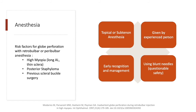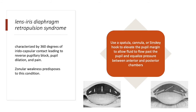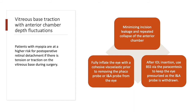You may target minus 1 to minus 2 diopters of postoperative refraction to compensate for any hyperopic surprises, especially if using negative IOLs. It is better to use monofocal IOLs rather than multifocal IOLs, as they are less sensitive to vertical decentration, which is more common in myopic eyes. At the time of surgery, to avoid the higher risk of globe perforation with retrobulbar and peribulbar anesthesia, topical or sub-Tenon anesthesia may be a better alternative. Early recognition of globe perforation signs like hypotony and loss of red reflex is important. One intraoperative challenge is the increased depth of the anterior chamber, which can be minimized by decreasing irrigating bottle height and increasing flow rate. Lens-iris diaphragm retropulsion syndrome can occur and can be overcome using a blunt instrument like a spatula to elevate the pupil margin.